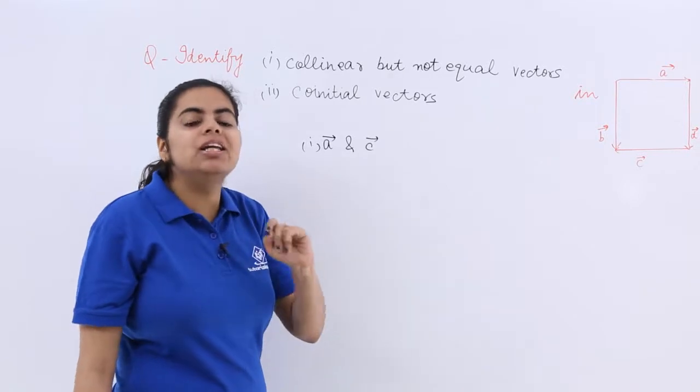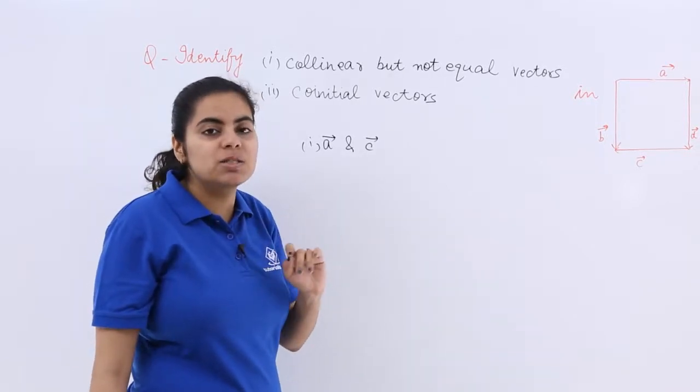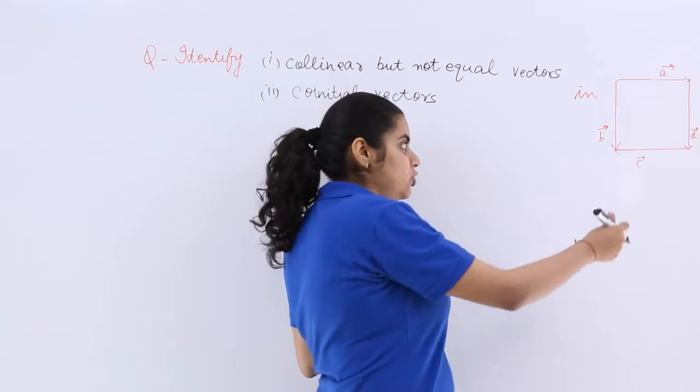What about the second part? Co-initial vectors. Co-initial vectors means common initial, so which have the same initial point.